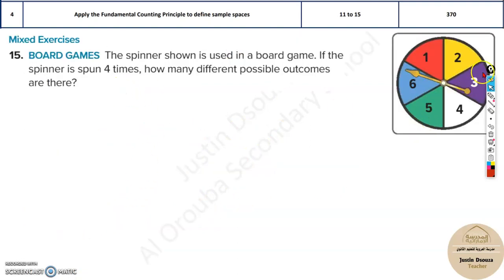And over here, we have a spinner is shown, which is used in a board game. If the spinner is spun 4 times, how many different possible outcomes are there? So, let's think about it. There are 6 possibilities in this particular spinner.